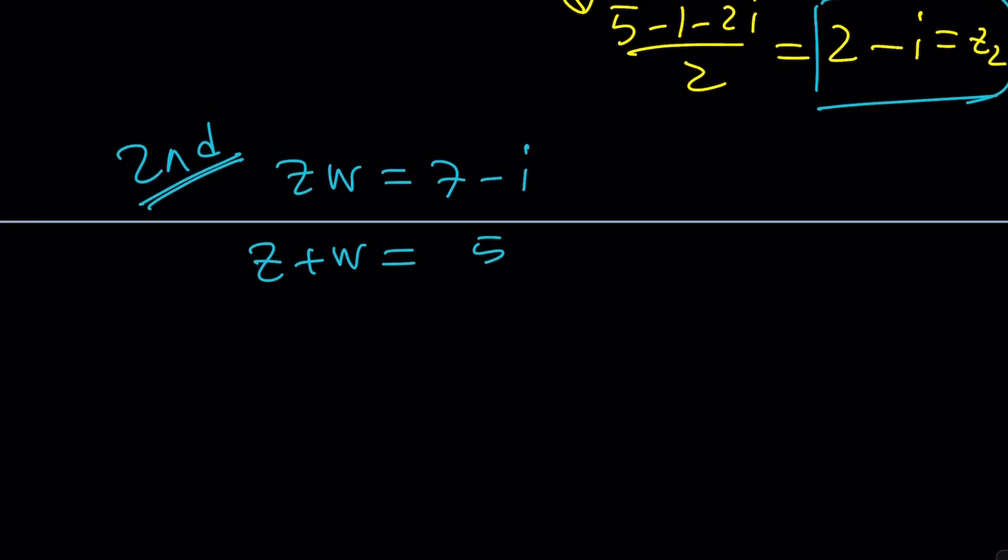How about this? Since the sum of Z and W is 5, then can I assume that, okay, Z plus W is real, by the way, but ZW isn't. So, that means Z and W are not complex conjugates.